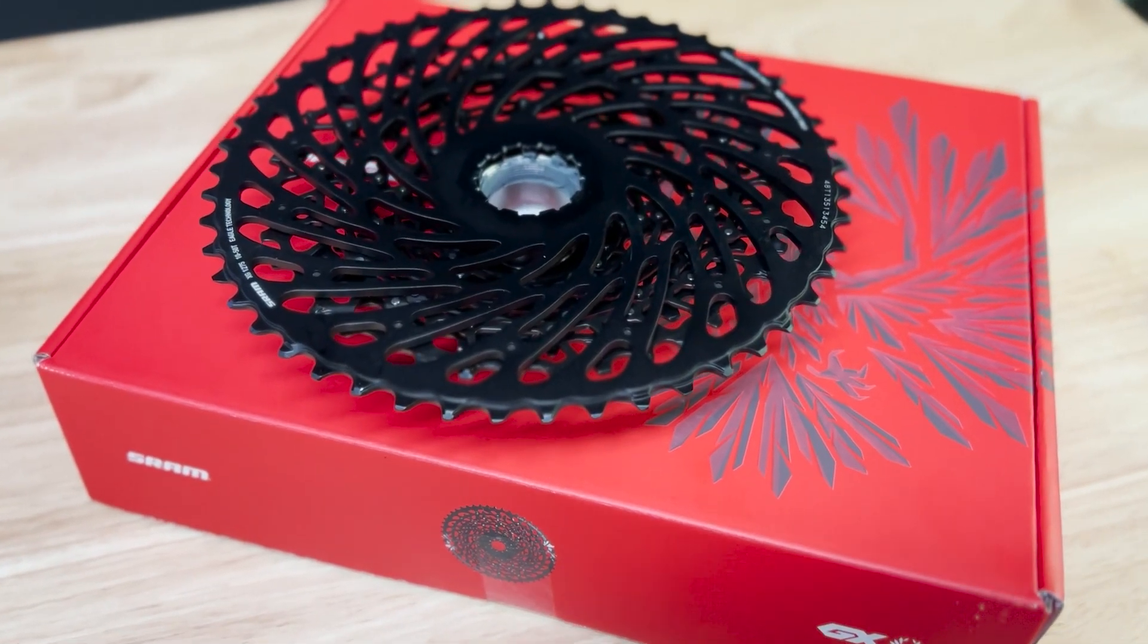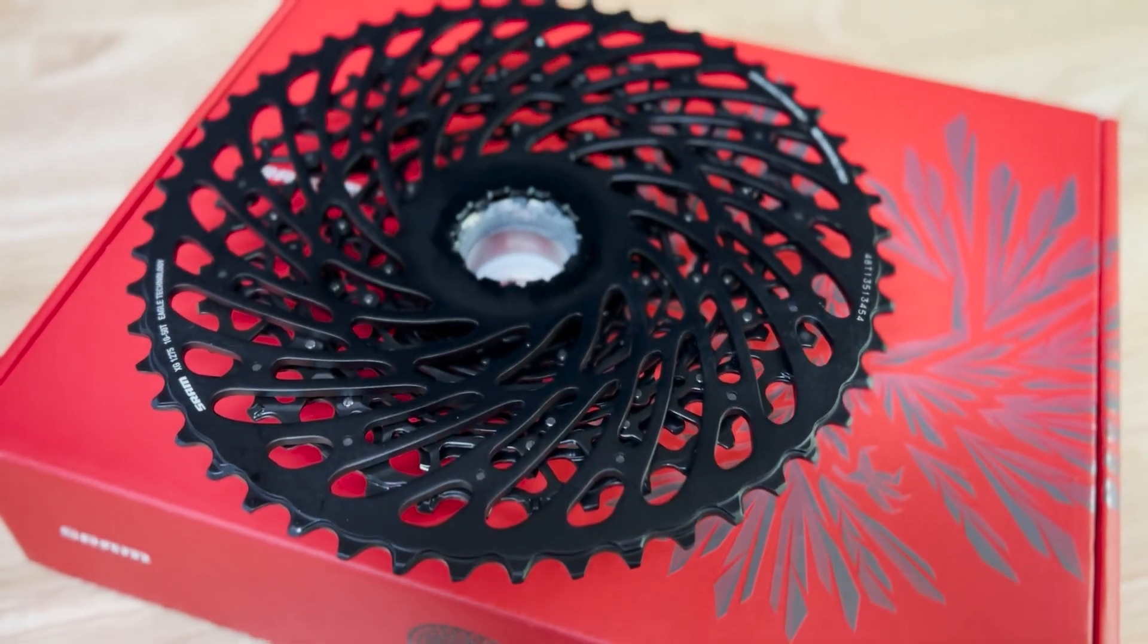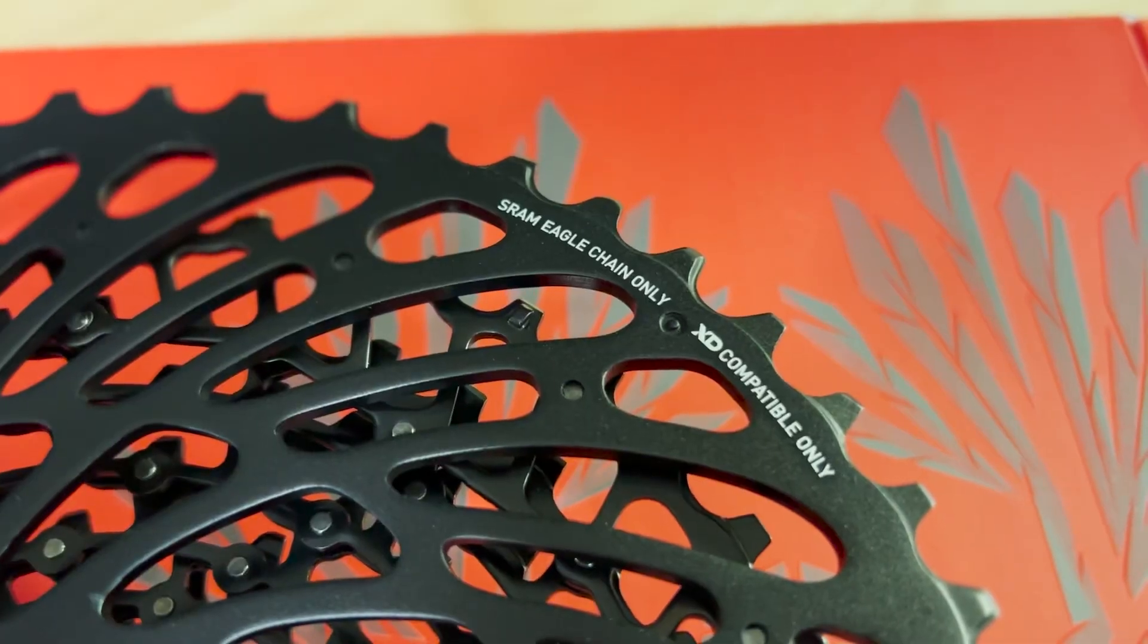Unsure which cassette you have? Take a look at the back of your SRAM cassette. They're usually labeled with XD compatible only or XDR compatible only.